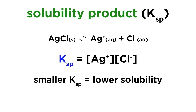The smaller the constant, the fewer the ions that will be present in solution, and therefore, the less soluble the substance must be. And compounds that are extremely water-insoluble will have Ksp values on the order of 10 to the negative 30, negative 50, or even smaller.